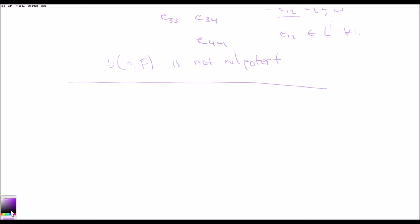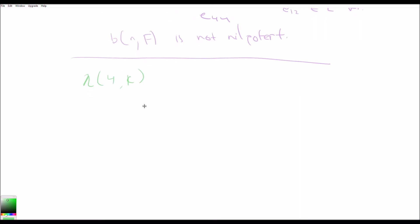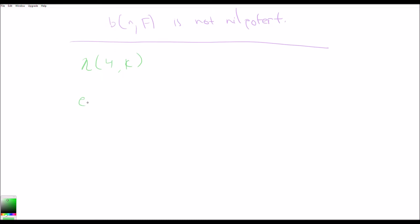Let's take a look at the strictly upper triangular matrices. We'll use 4×4 matrices over the complex numbers again. This algebra is spanned by e12, e13, e14, e23, e24, and e34 — we don't have the diagonal terms anymore.